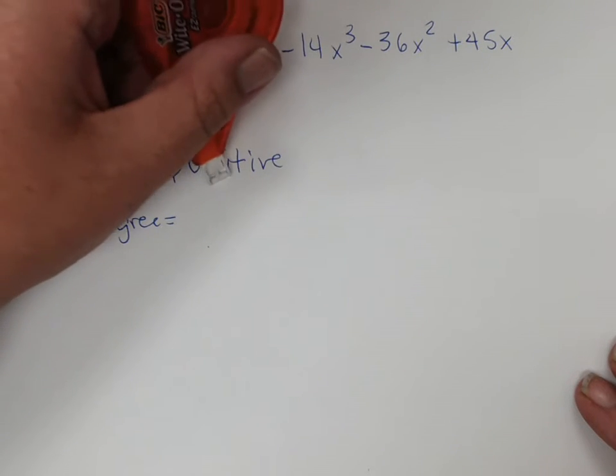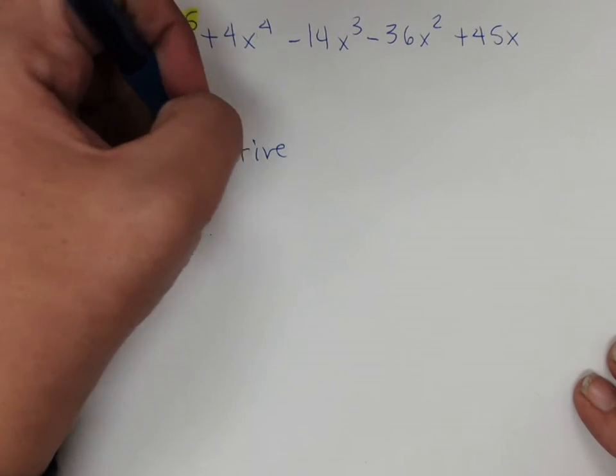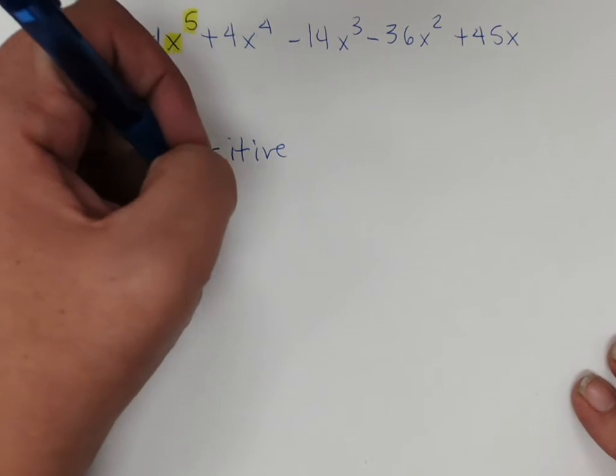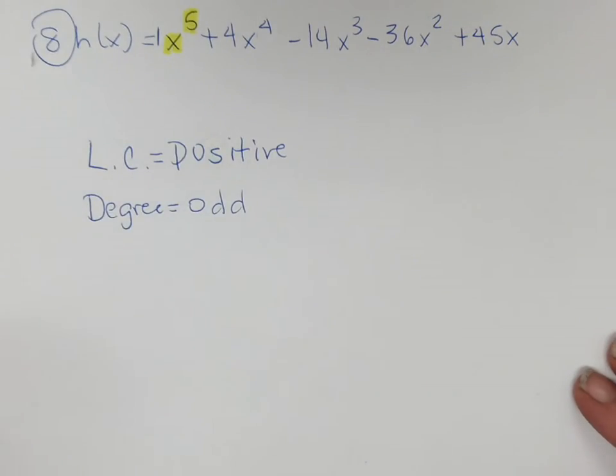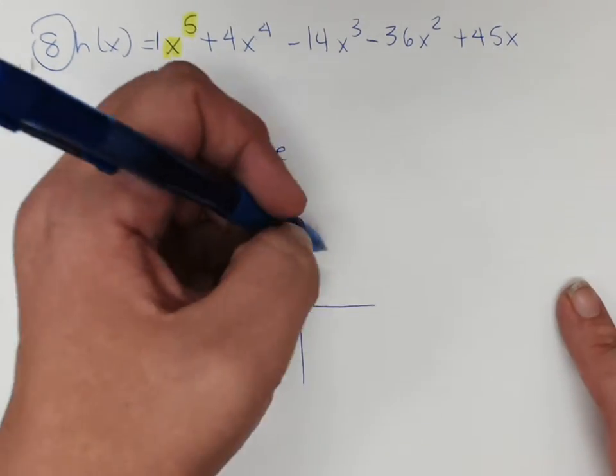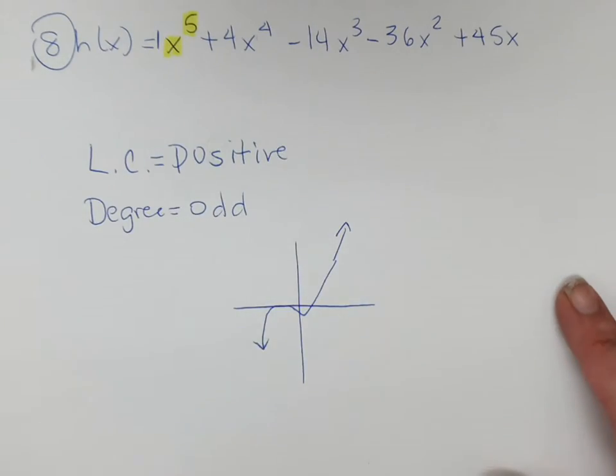Now, our degree of this polynomial. Well, the largest of my exponent values is 5, which is odd. So this is going to go in opposite directions, but on the right side we know it's going up. So it has to look something kind of like that.